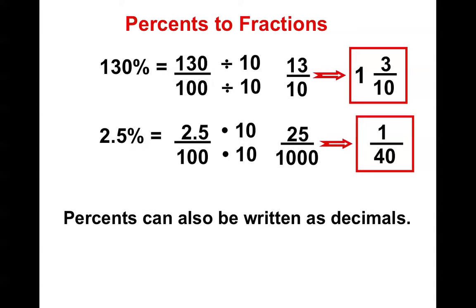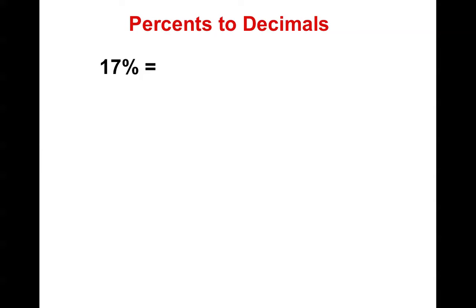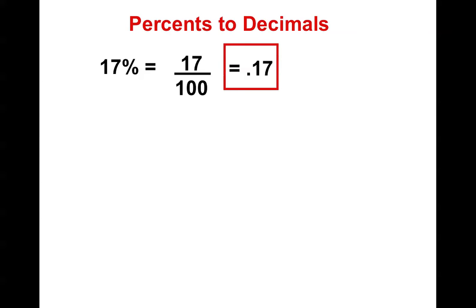So percents can also be written as decimals. How do I write 17% as a decimal? Well, it's 17 over 100, which is 17 hundredths, which can also be written as 0.17. 24% is 24 over 100, which could also be written as a decimal — 24 hundredths.